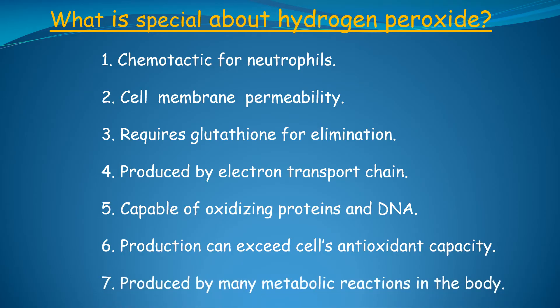And number seven, produced by many metabolic reactions in the cell. This is the reason why there are so many environmental factors that can exacerbate ulcerative colitis — each environmental factor can increase the activity of one or more of the metabolic reactions that generate hydrogen peroxide. Environmental factors that increase hydrogen peroxide are called oxidative stressors. Life itself is an oxidative stressor. In summary, hydrogen peroxide is a prime candidate as the causal agent in ulcerative colitis because it has all the molecular features and characteristics necessary to initiate the type of colonic inflammation characteristic of this disease.